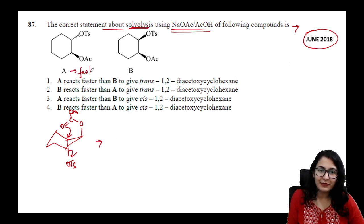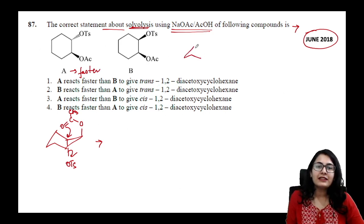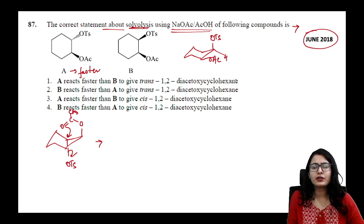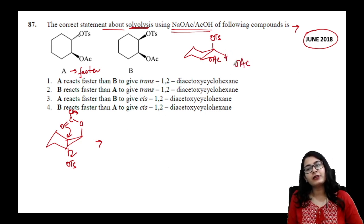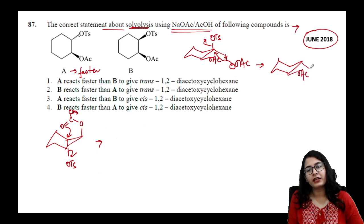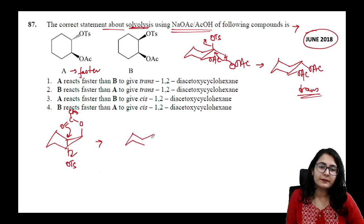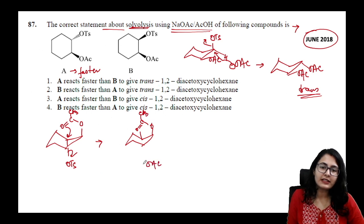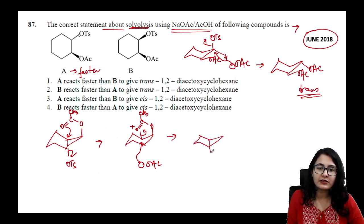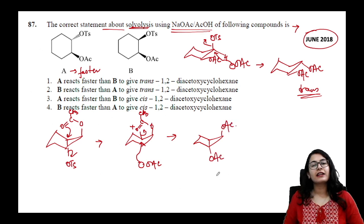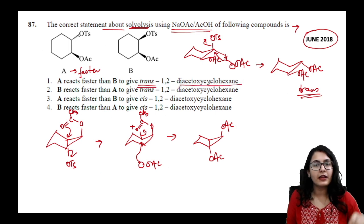For compound B, OTs is above and hydrogen is equatorial, so there is only a simple SN2 attack giving the diequatorial product — trans-diacetoxycyclohexane. In compound A, NGP by the acetoxy group attacks the same carbon where the tosylate was, giving a retention product that is also the trans-diacetoxy product. A reacts faster than B due to NGP.